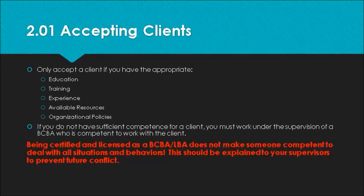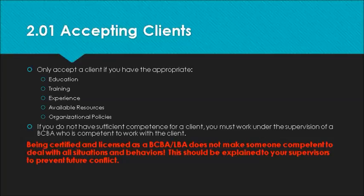2.01 is accepting clients. This is important because it gives us some guidelines on what we need to consider before accepting a specific client. Some of the factors in this decision are our level of education, our training, on-the-job experience, our available resources — what do we have access to in our organization or in our community — and the organizational policies.